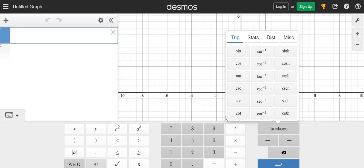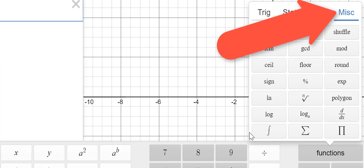you'll see four things at the top: trig, stats, DIST, and then MISC. So from here, you're going to select the MISC,